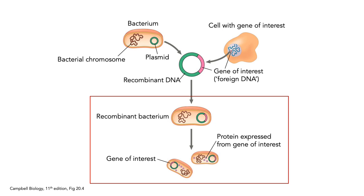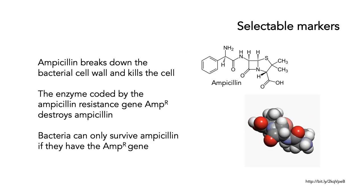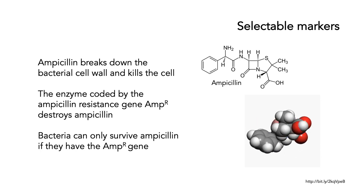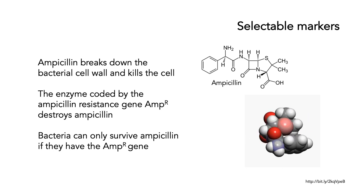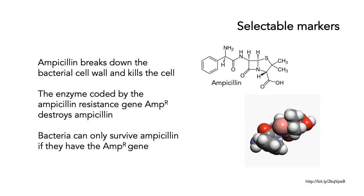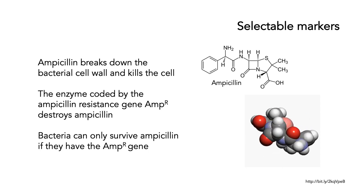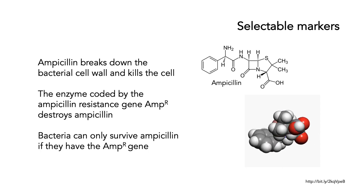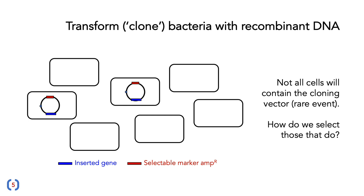Let's look at the last part of the figure — how you get a recombinant bacterium and express proteins from your gene of interest. A key feature needed is selectable markers. Ampicillin breaks down the bacterial cell wall and kills the cell, but there's a protein encoded by the ampicillin resistance gene, AmpR, which destroys ampicillin. Bacteria can only survive ampicillin if they have the AmpR gene. We transform bacteria with the recombinant DNA we've just made, but not all cells will contain the cloning vector — it's a very rare event — so we need to select for those cells that do.